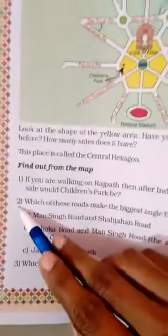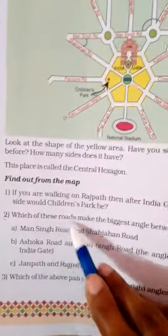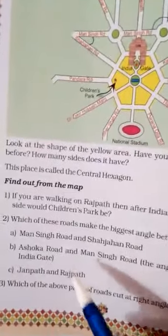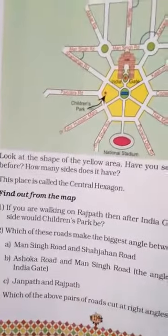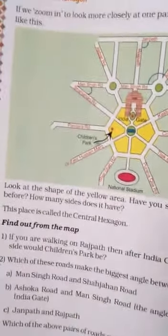Number two: which of these roads make the biggest angle between them? Here are the different roads. Let us find the biggest angle. Option A: Mancing Road and Sanjahan Road.